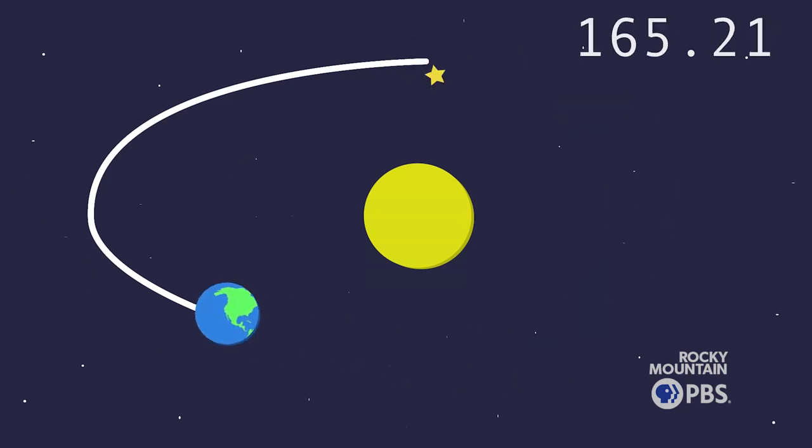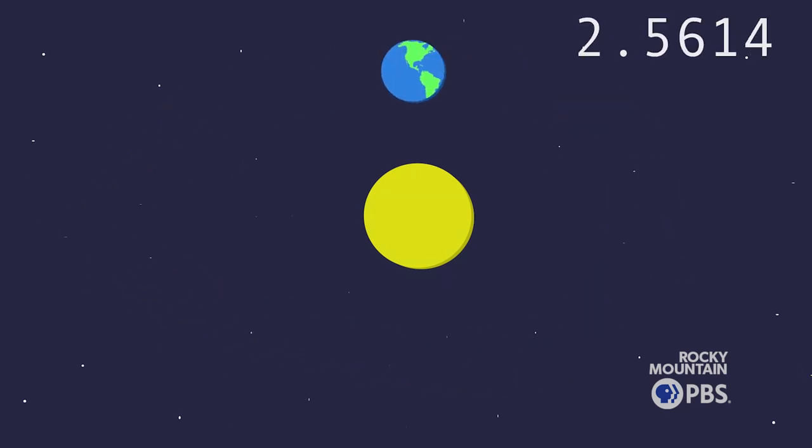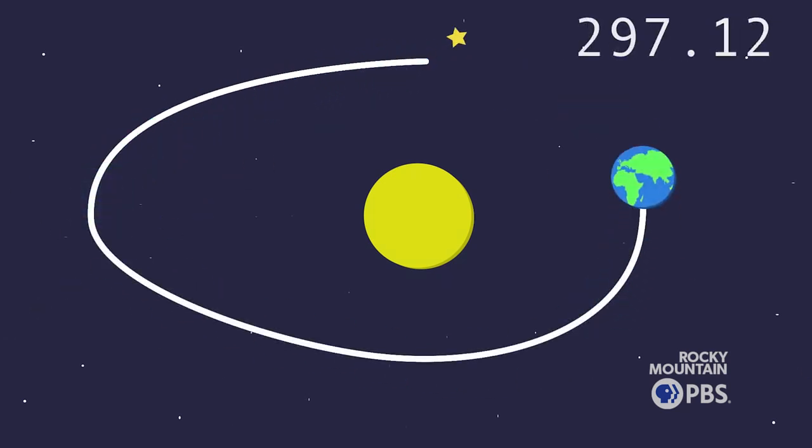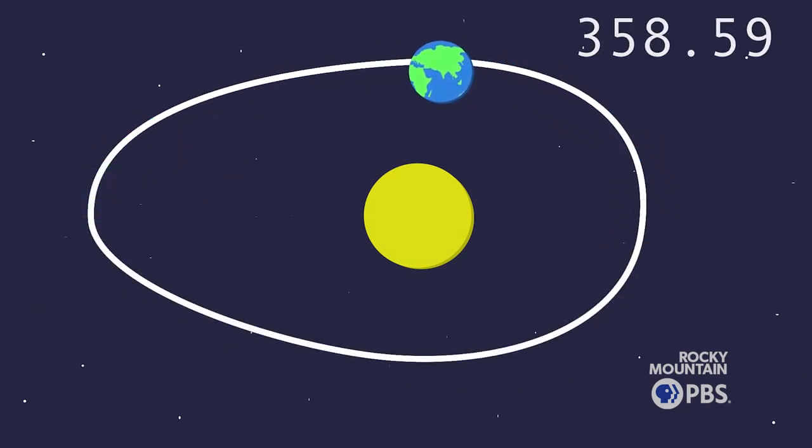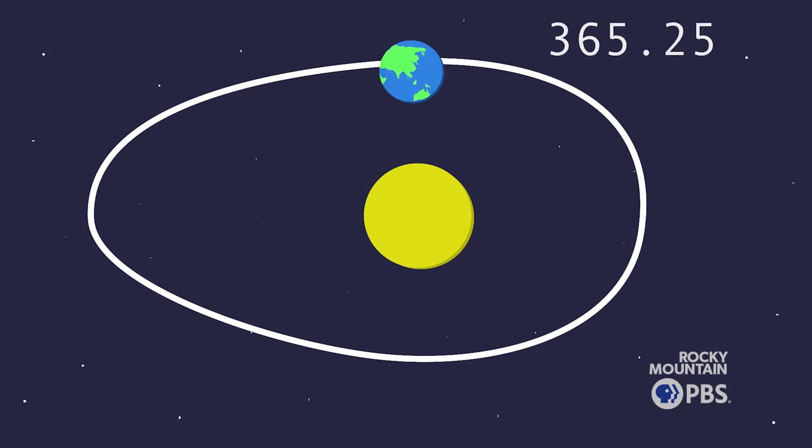However, the Earth's orbit around the Sun is not exactly 365.25 days. Earth actually revolves around the Sun in 365.24219 days. So one full day added into the calendar every four years is a little bit of an overcorrection.